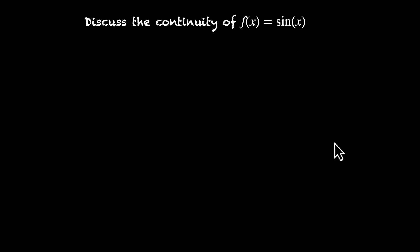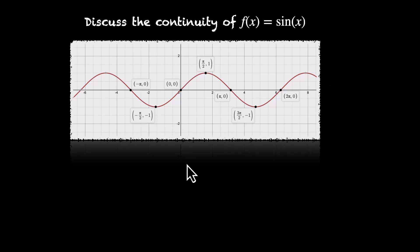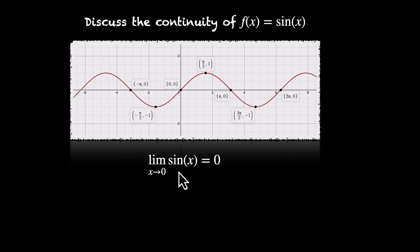If we recall the graph of sin(x), we can see that sin(x) is forever continuous — it is continuous throughout its domain. Now our job is to prove this. For the proof, we'll use the assumption that the limit as x approaches 0 of sin(x) is equal to 0.